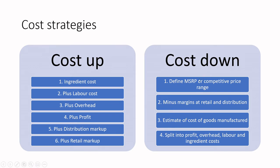The second strategy is cost-down, where you work with the manufacturer's suggested retail price or competitive price range and know what that price should be. You subtract your margins at retail and distribution to get an estimate of what your cost of goods manufactured should be, then split that into profit, overhead, labor, and ingredient costs. This cost-down strategy is very frequent — grocery retailers will say they must maintain consumer price at a certain point, while ingredient and labor costs are going up. You have to backstop from that price and figure out who takes which margin, then formulate specifically to that ingredient cost target.